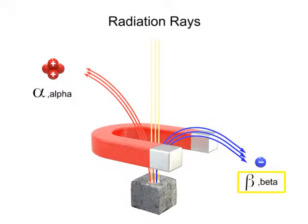Beta rays are a stream of negatively charged electrons. After passing through the magnet, they bend in the opposite direction of the alpha ray. Because electrons of the beta ray have less mass than the protons and neutrons in the alpha ray, the beta ray undergoes a more pronounced bend.